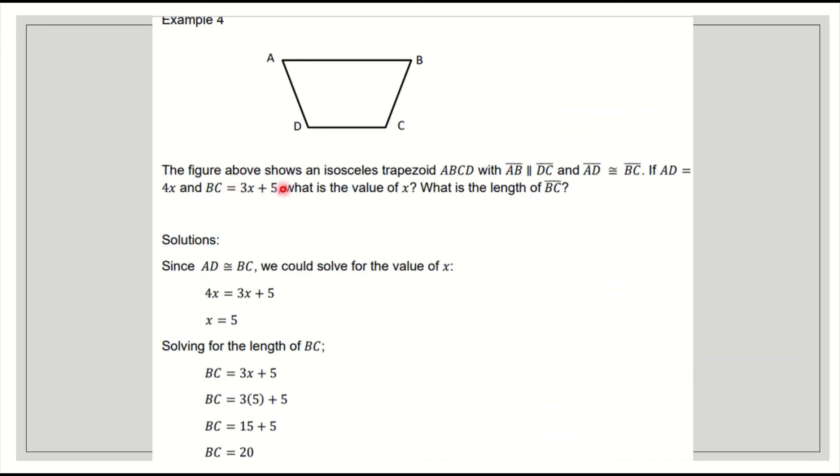Next example. The figure above shows an isosceles trapezoid ABCD with AB parallel to DC and AD congruent to BC. If AD is 4x and BC is 3x plus 5, what is the value of x and what is the length of BC? Since AD and BC are congruent, we could solve for the value of x. So 4x is equal to 3x plus 5. Transpose 3x to the other side, it becomes negative. 4 minus 3 is 1, so the value of x is 5.